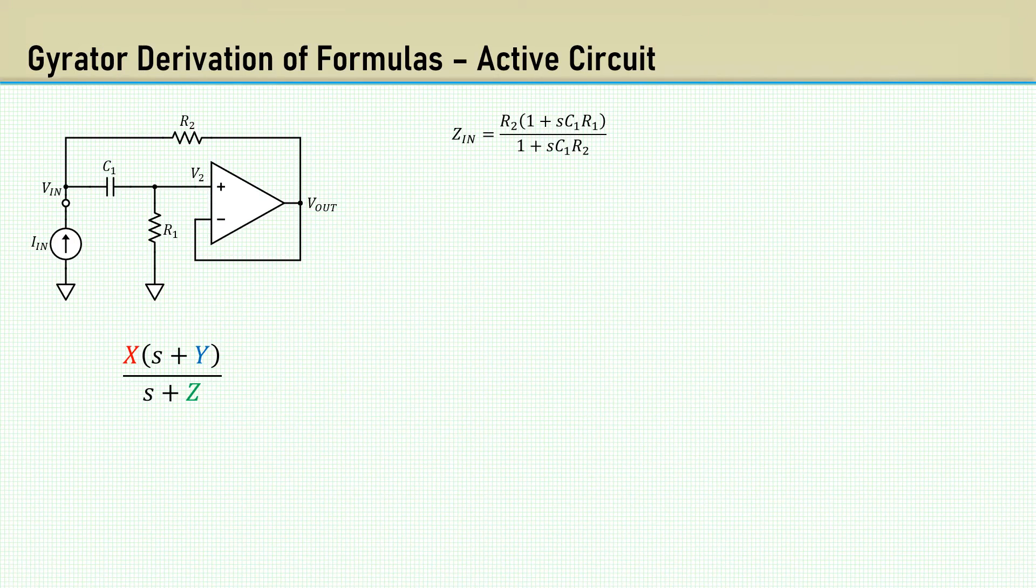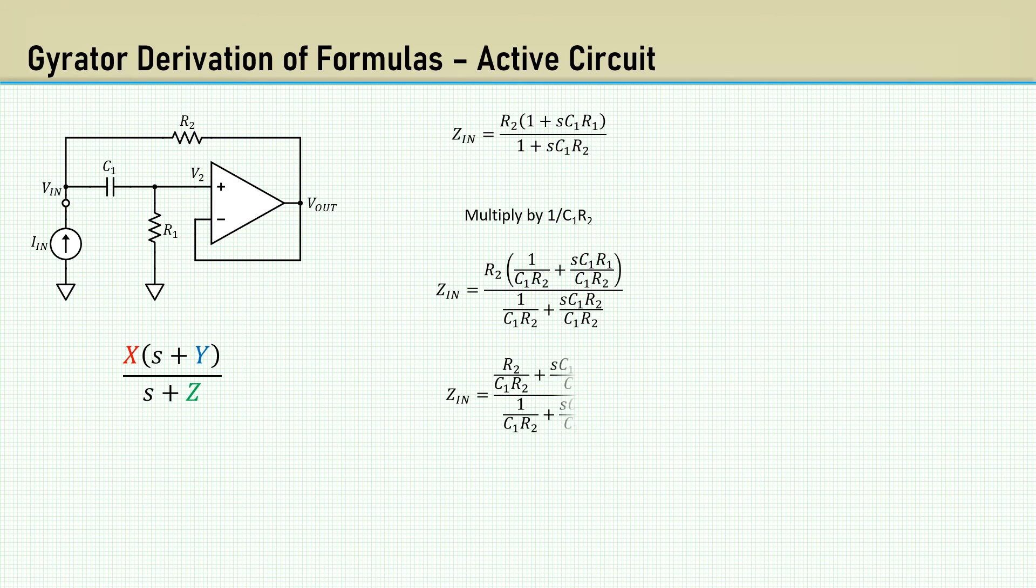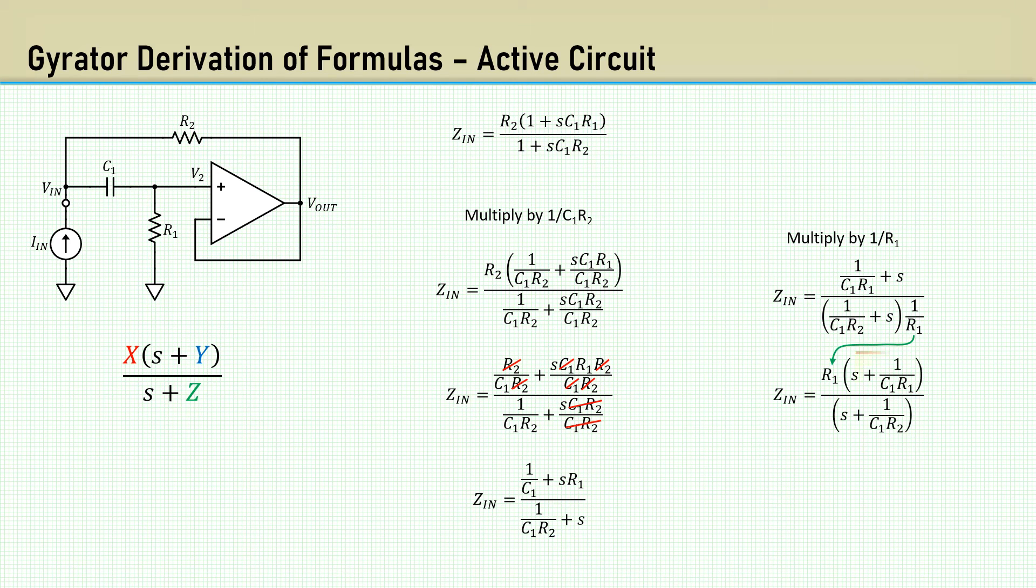We must keep going to isolate the S terms. Multiply the top and bottom by 1 over C1 R2. This gives us numerous opportunities for terms to cancel, which simplifies to this. To isolate the last S, we multiply the top and bottom by 1 over R1. 1 over R1 in the denominator flips to the numerator. And finally, our equation for Zn. It is now in the form we desired.